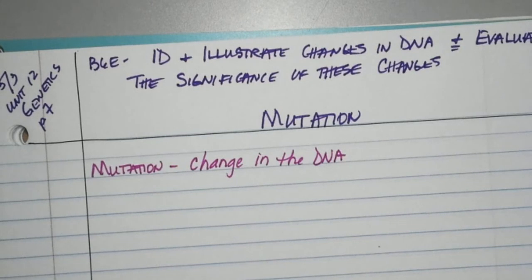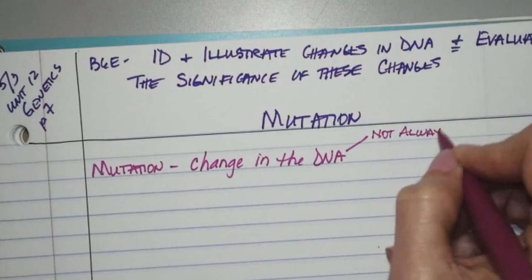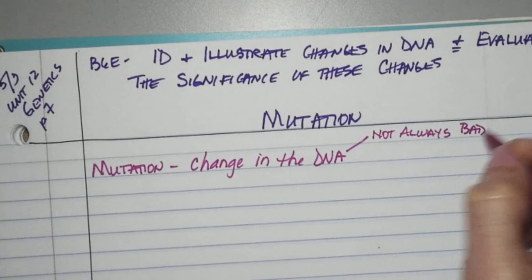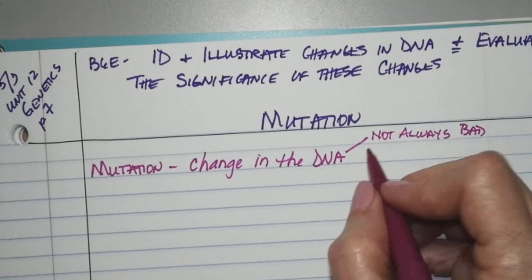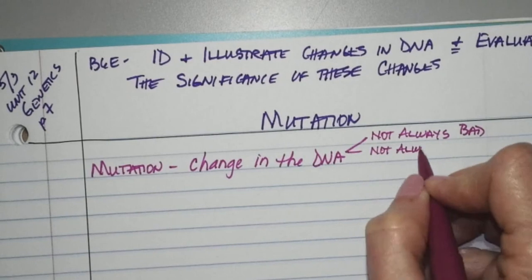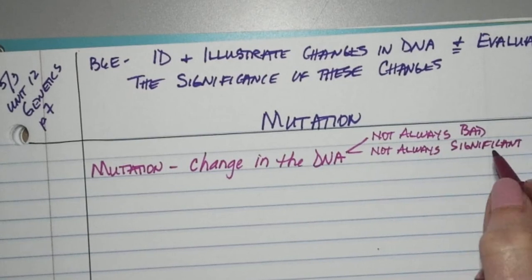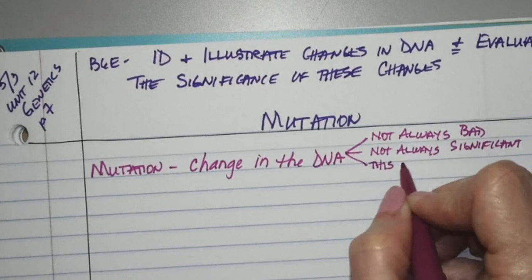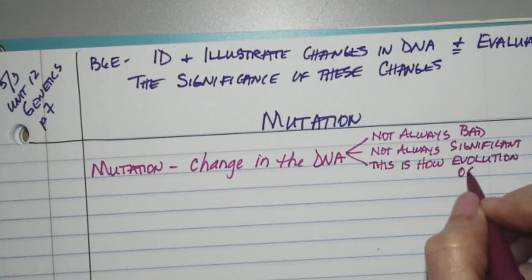Three things about this. It's not always bad. We just automatically associate bad with mutation because as humans, we're only really going to pay attention to the bad things. They're not always significant, and this is how evolution occurs.